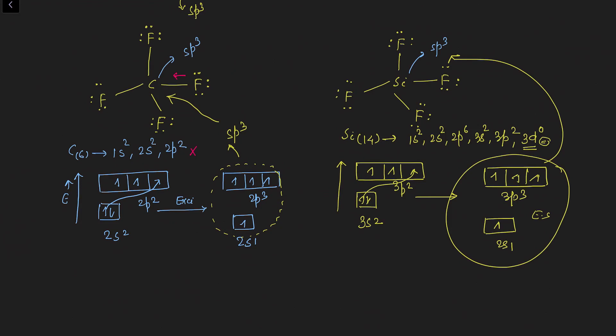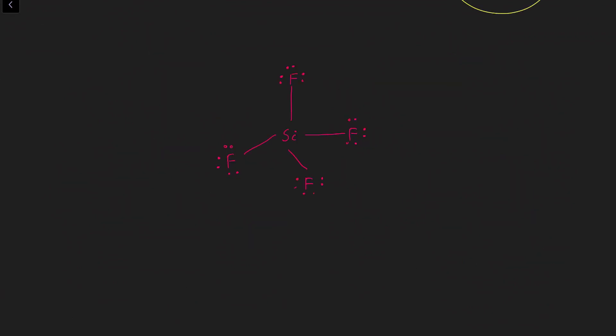Check the hybridization of each atom in silicon tetrafluoride. Each fluorine is sp3 hybridized, and silicon is also sp3 hybridized but with one empty d orbital. Fluorine wants to donate its lone pair to silicon's vacant d orbital, but in sp3 hybridized condition, fluorine cannot donate — because if it does, a pi bond would form, and an sp3 hybrid orbital can never form a pi bond.